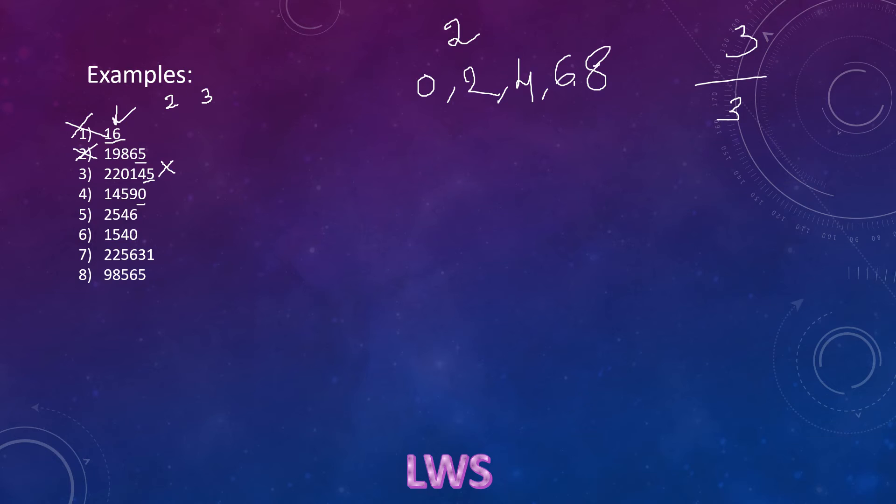So units place is 0, so this number is divisible by 2. For divisibility by 3, we check the sum of the digits: 1 plus 4 is 5, 5 plus 5 is 10, 10 plus 9 is 19. So 19 is not divisible by 3, therefore this is not exactly divisible by 6.